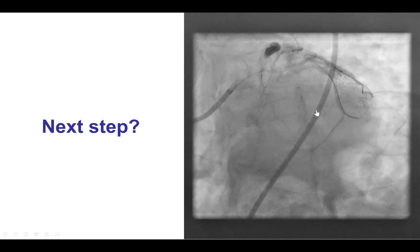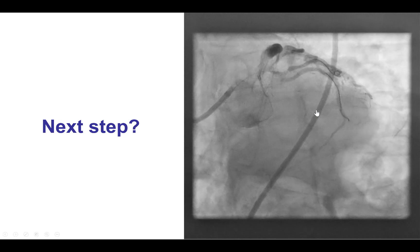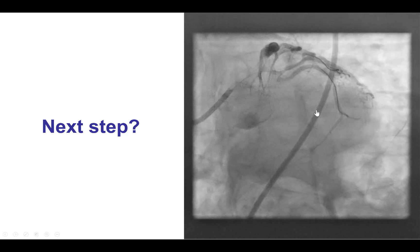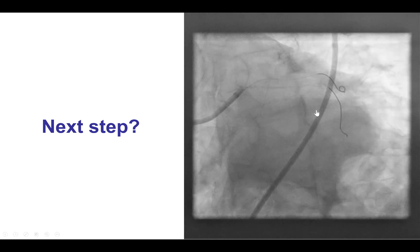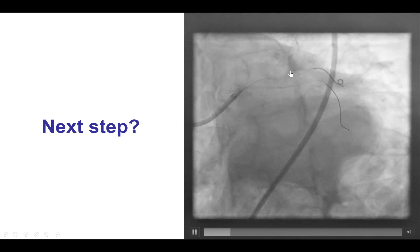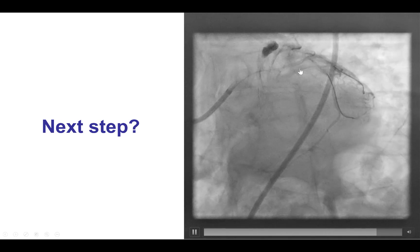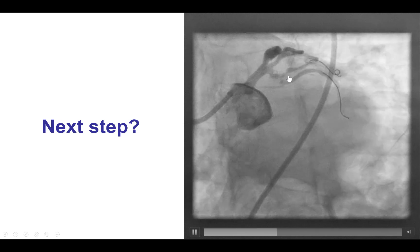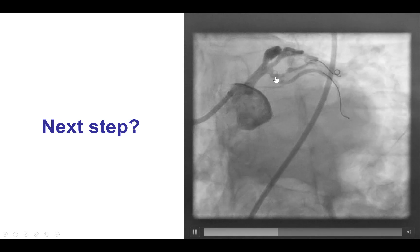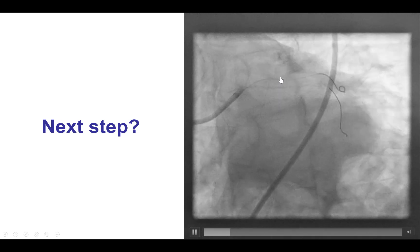This is the angiogram in a slightly different angulation than the original angiogram, and this is very useful because it changes the description of the lesion. The lesion in the obtuse marginal is not actually at the bifurcation, but slightly further down into the vessel. And there is no significant disease, apparently, in the more proximal portion of the OM1.